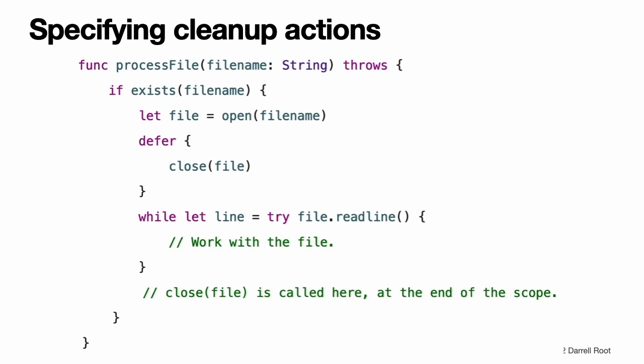Deferred actions are executed in the reverse of the order that they are written in your source code. That is, the code in the first defer statement executes last. The code in the second defer statement executes second to last, and so on. The last defer statement in source code executes first. The above example uses a defer statement to ensure that the open function has a corresponding call to close. Note: you can use a defer statement even when no error handling code is involved.